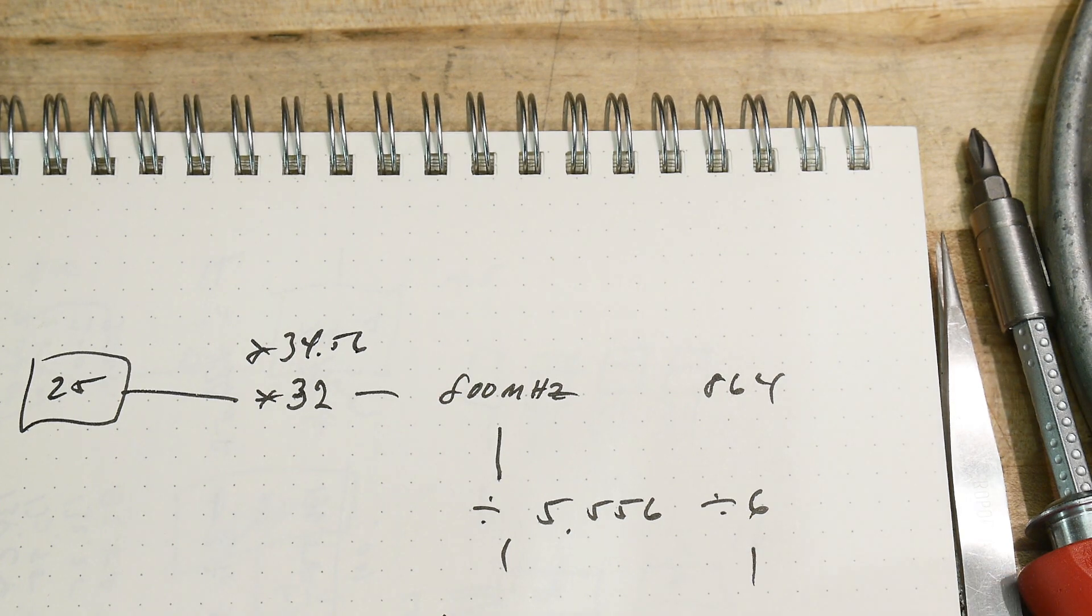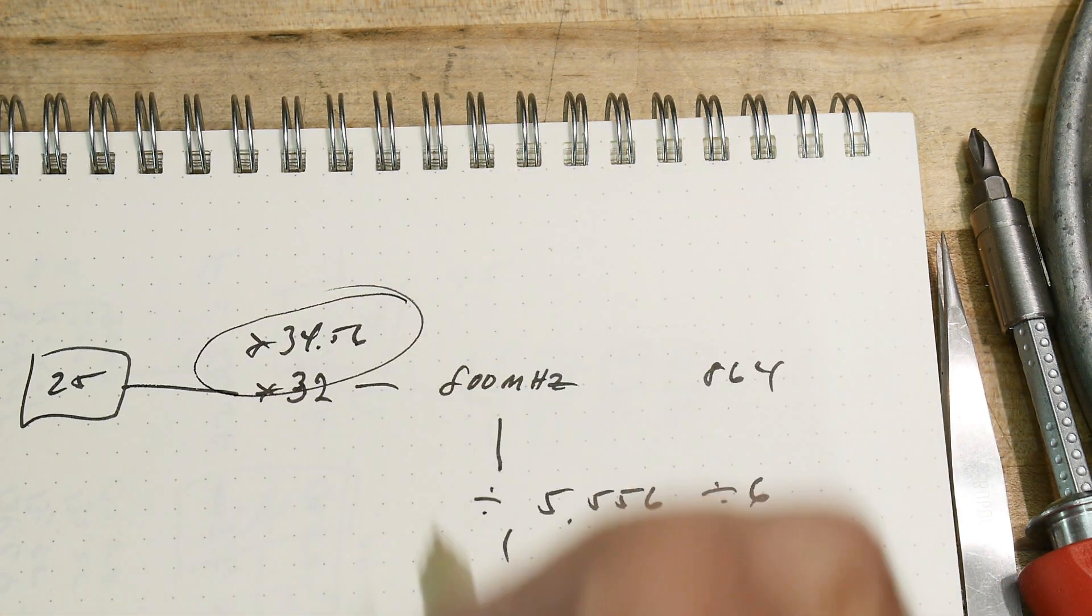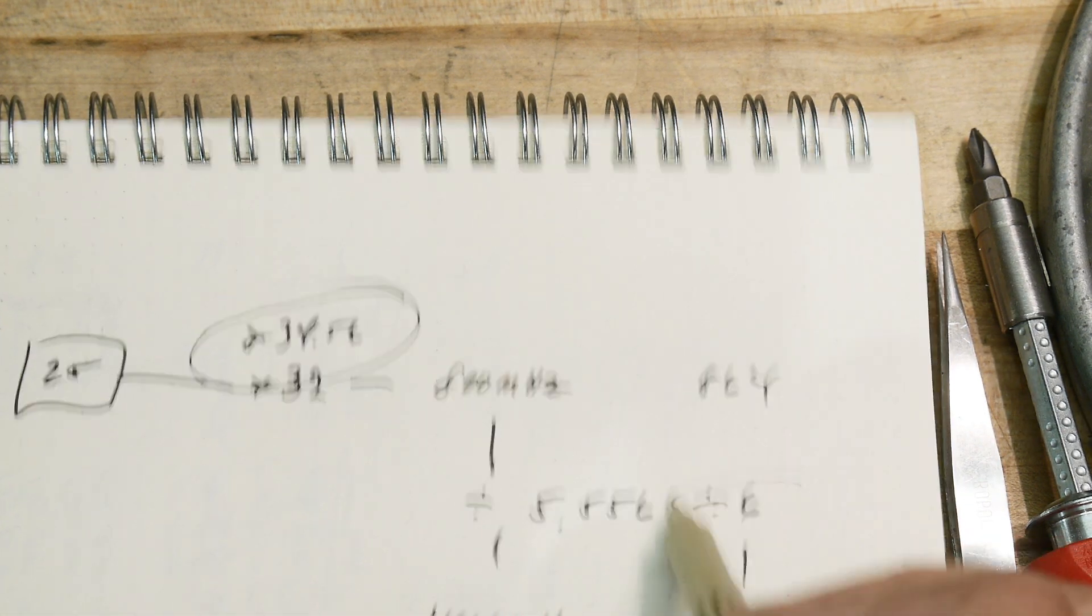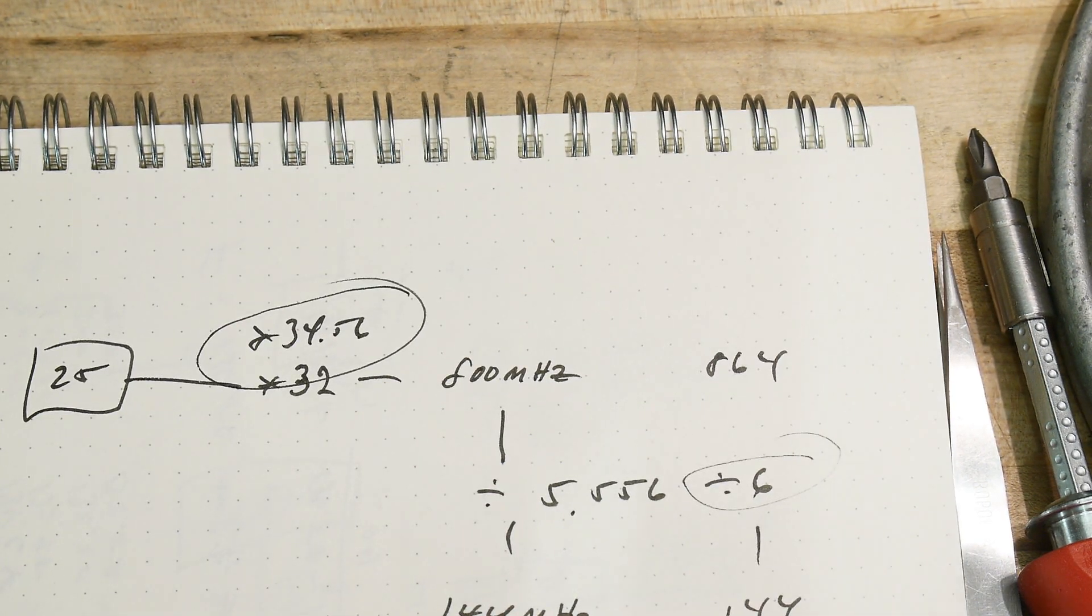Okay, so that's what I decided to do. I want to multiply by 34.56, and divide by 6 to get my 144 megahertz.